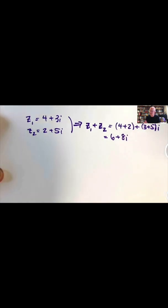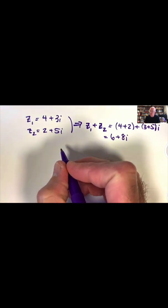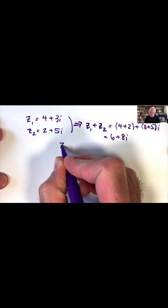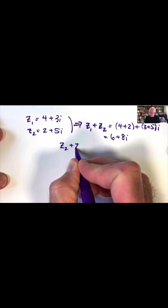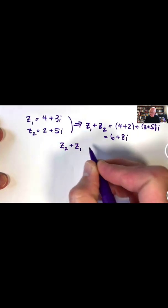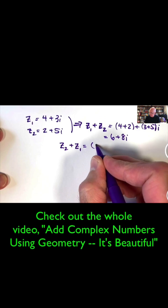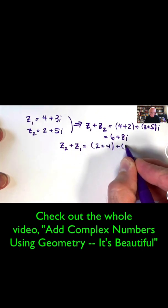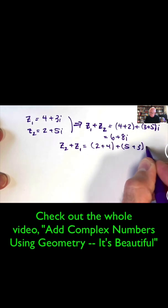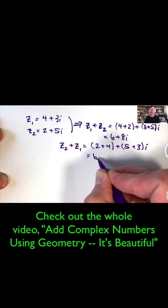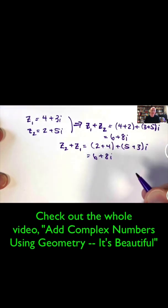An immediate benefit of this approach is we see right away that the commutative property will hold. Z1 plus Z2 should be the same as Z2 plus Z1, and the reason is because the real numbers are commutative under addition as well. If I do this calculation, I get the exact same answer, 6 plus 8i.